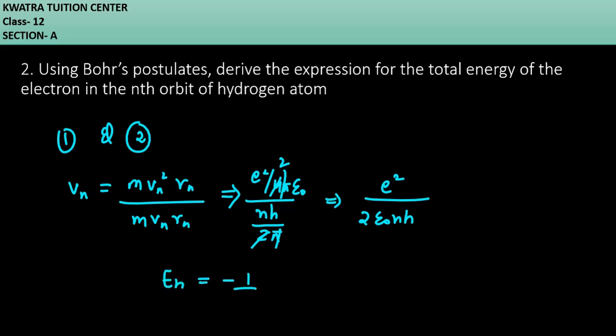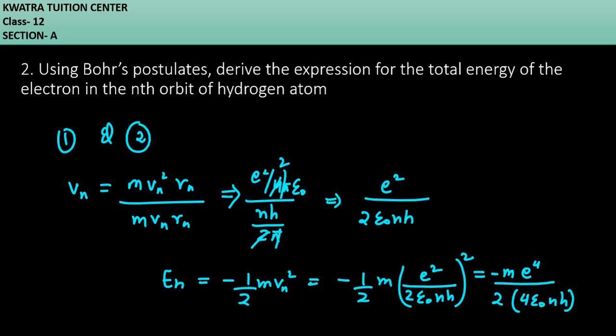E n abhi hamna nikala tha half mvn square. Now you can put the value of vn at it. E square over 2 epsilon naught N h square over it. Then you will get the final answer. me4 over 2 minus ahead of it 4 epsilon naught N h. So you will get minus me4 divided by 8 epsilon naught N h.